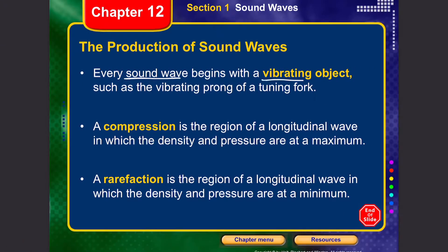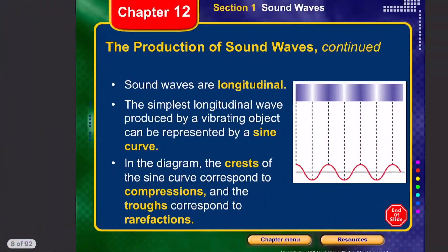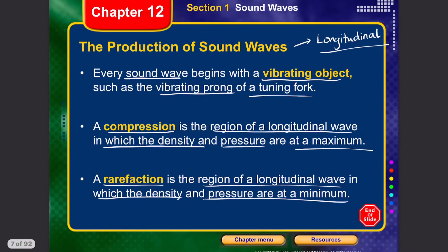Every sound wave begins with a vibrating object — such as the prong of a tuning fork, the vibrating disc of a speaker, or the vibrations of a string. Sound waves are classified as longitudinal waves, which travel in the form of compressions and rarefactions. A compression is the region where density and pressure are at a maximum; a rarefaction is where they are at a minimum. The simplest longitudinal wave can be represented as a sine wave, where the crest corresponds to compression and the trough corresponds to rarefaction.